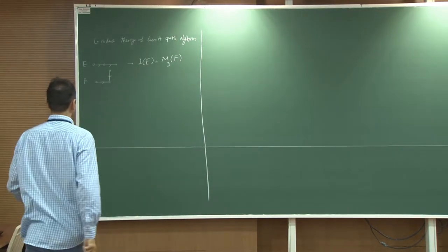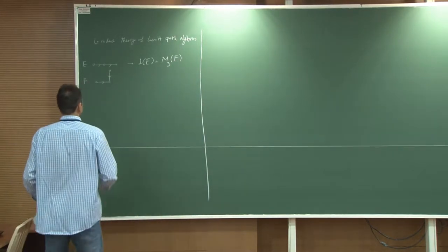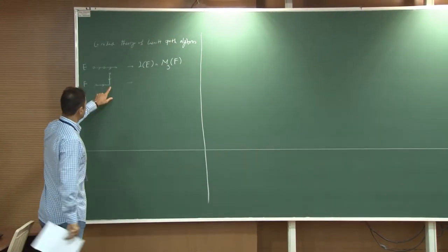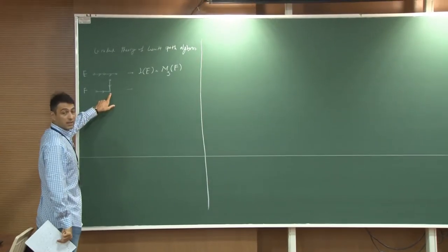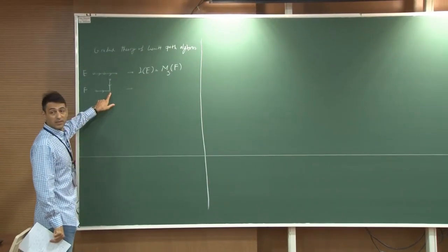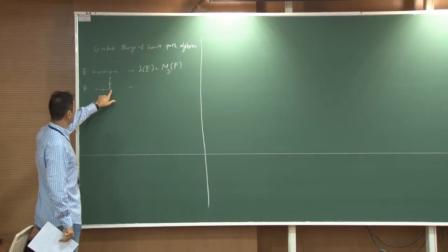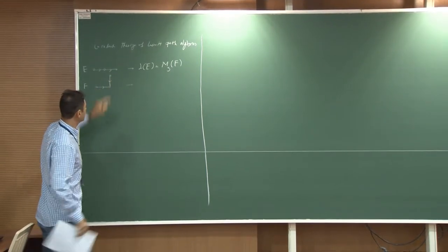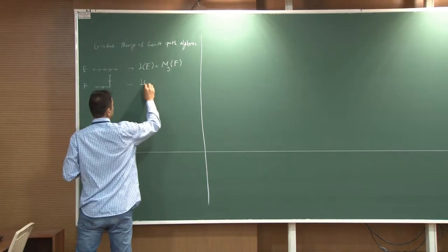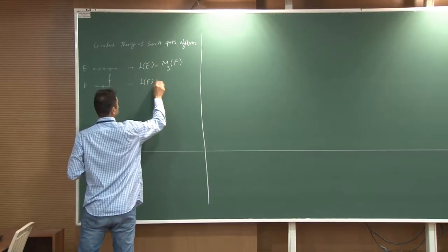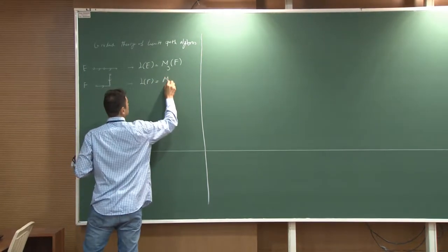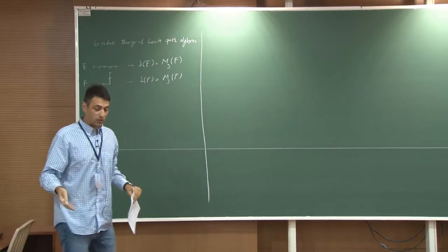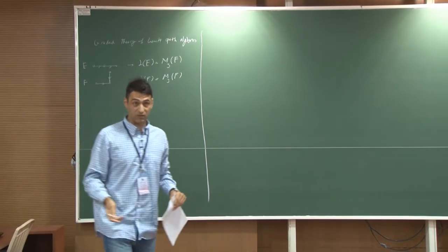Let's try the other graph. Same thing: you look at the sink and count all the paths ending here. One, two, and three. So the Leavitt Path Algebra associated with this one is also a three-by-three matrix over this coefficient field.